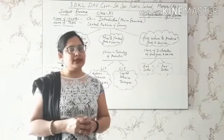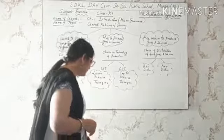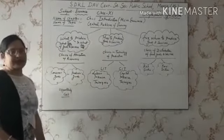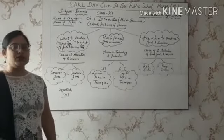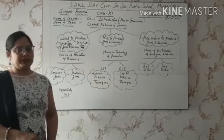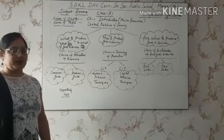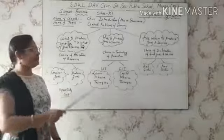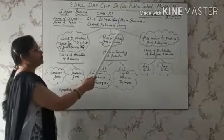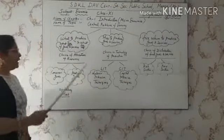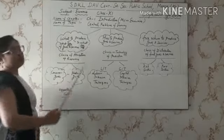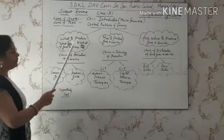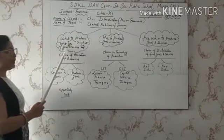Let's discuss economic problems in detail. These are called central problems because there is no economy where economic problems do not exist — they are central to every economy. The major variations of these problems are: what to produce, meaning what type of goods and services should be produced.